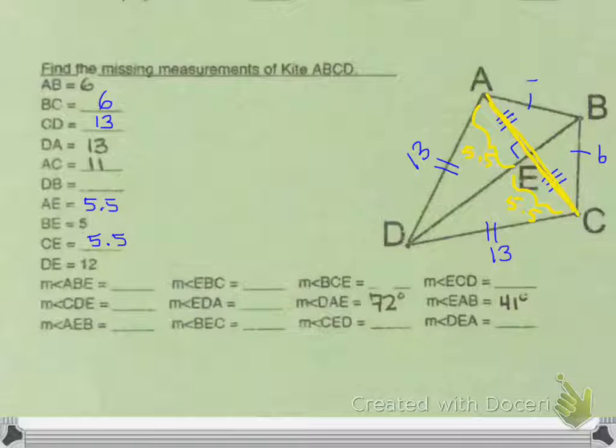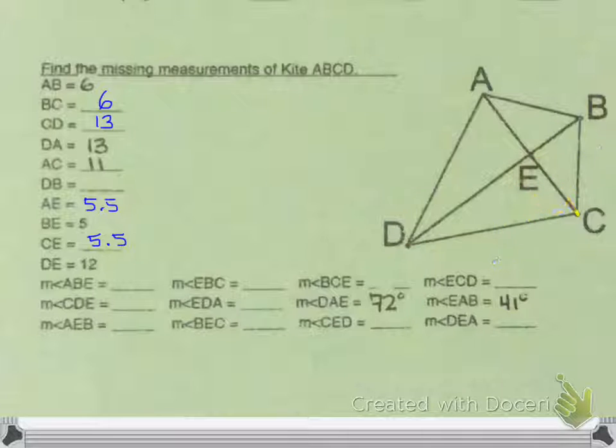I'm going to erase my markings because my diagram is getting kind of crazy again. It told us DE was 12, and BE was 5. Those two parts are not congruent, that's not part of being a kite. You don't have both diagonals congruent. It's only the short diagonal that is being bisected. But this question is asking me to find DB, which is the whole entire thing. So I'm just going to add 12 plus 5, and I would get 17 for that.